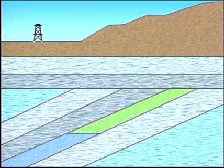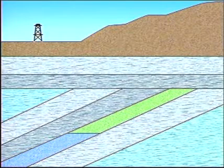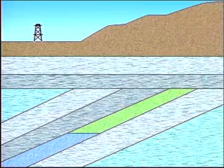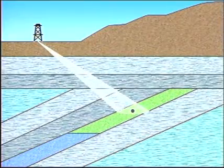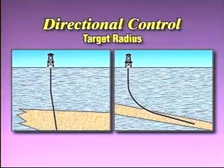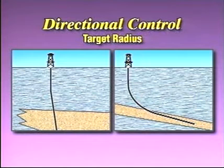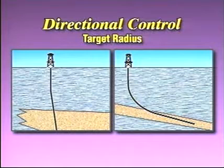Our goal in planning a well profile is to determine the most economic path from the surface to the bottom hole location. We first have to determine the target coordinates with respect to the proposed surface location. At the same time, we have to assign the target radius based on our well objectives.